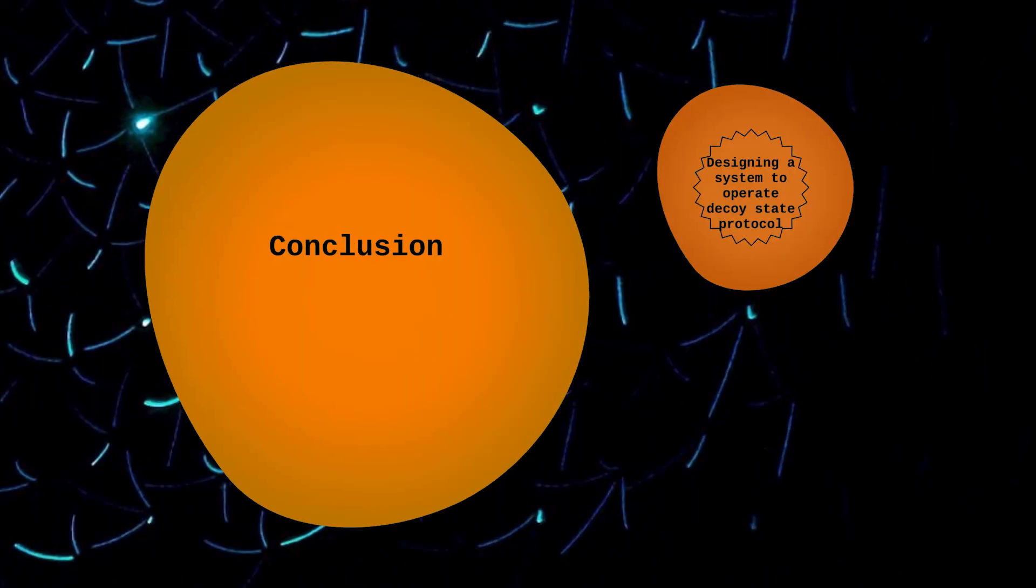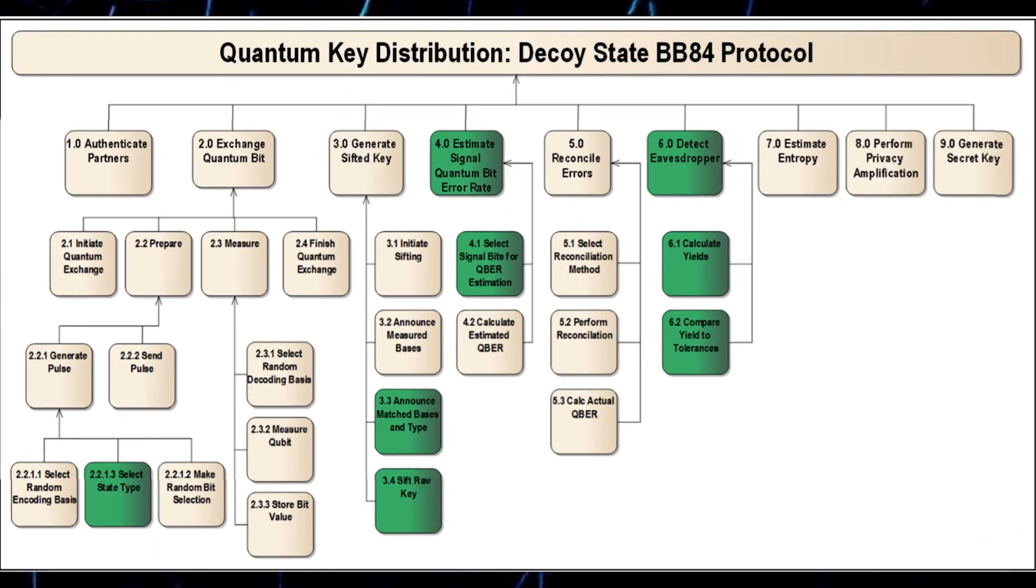To conclude, here is a modified BB84 QKD system by adding the decoy state protocol into it. We can have a theoretically secure system that cannot be eavesdropped following the nine steps on this figure.